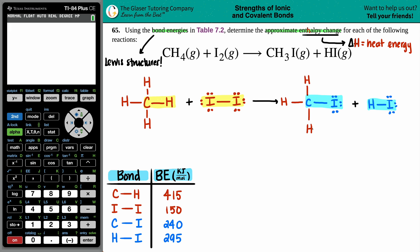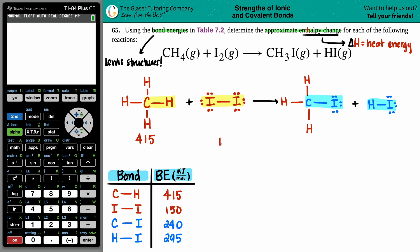Now we assign the bond energies to the ones that change. Since I'm only dealing with one C–H bond, that's 415 kJ/mol. I have an I–I bond, that's 150. On the product side, I have the new C–I single bond which is 240, and the new H–I single bond which is 295.